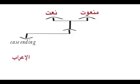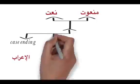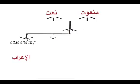If Man'ud is Mansub, Naat will be Mansub. If Man'ud is Majrur, then Naat will be Majrur. The second thing is gender. If Man'ud is Mu'annas, Naat will definitely be Mu'annas. If Man'ud is Mudhakkar, then Naat will be Mudhakkar. Gender is called At-Tazkir wa At-Ta'nis — masculine or feminine.